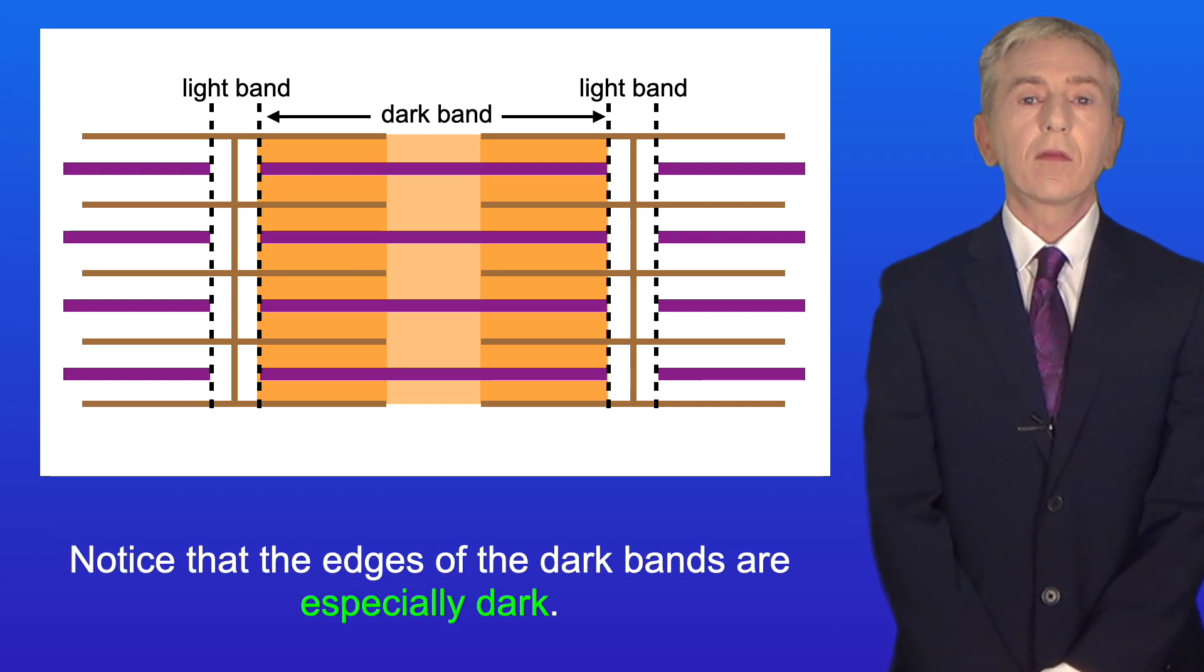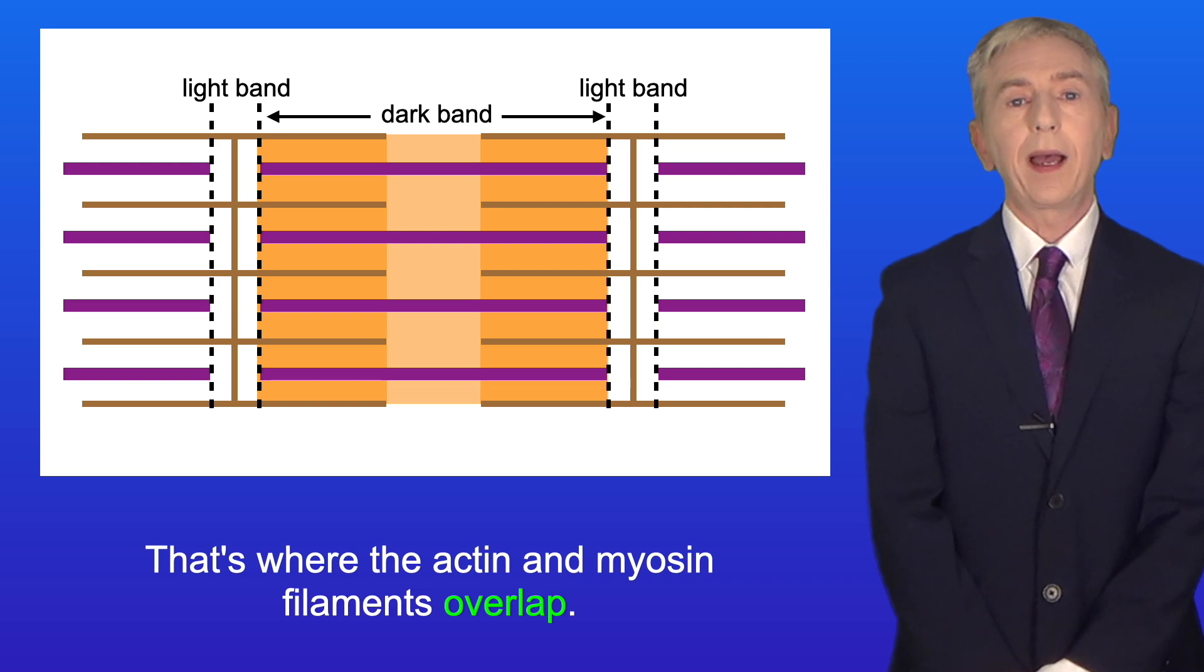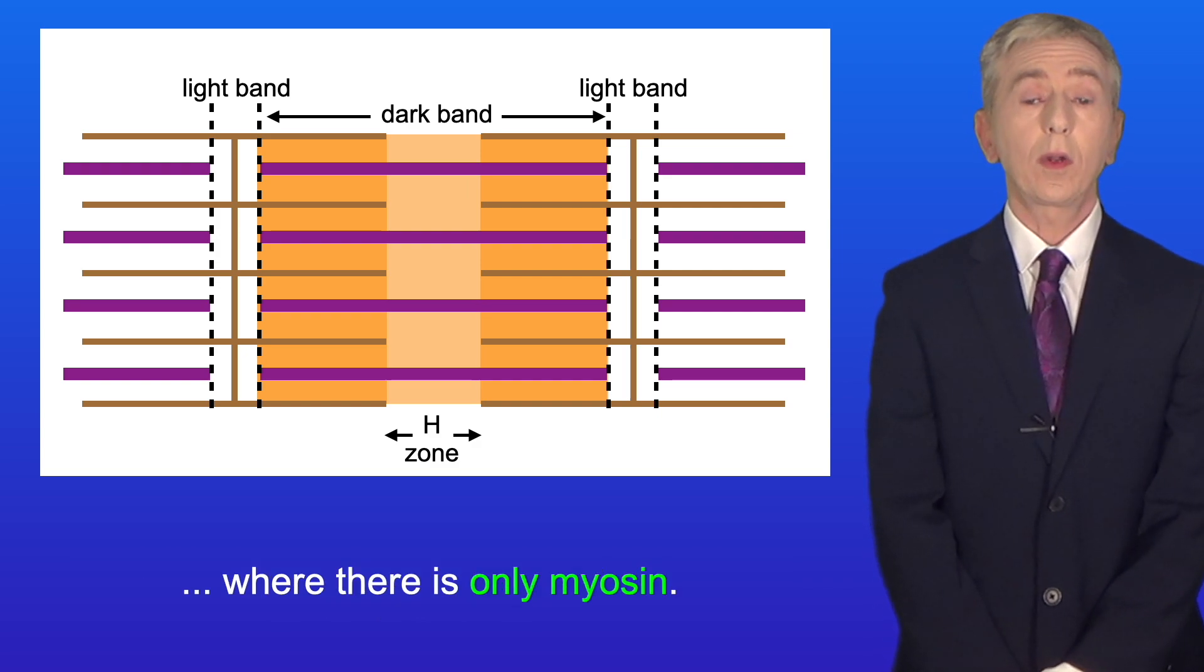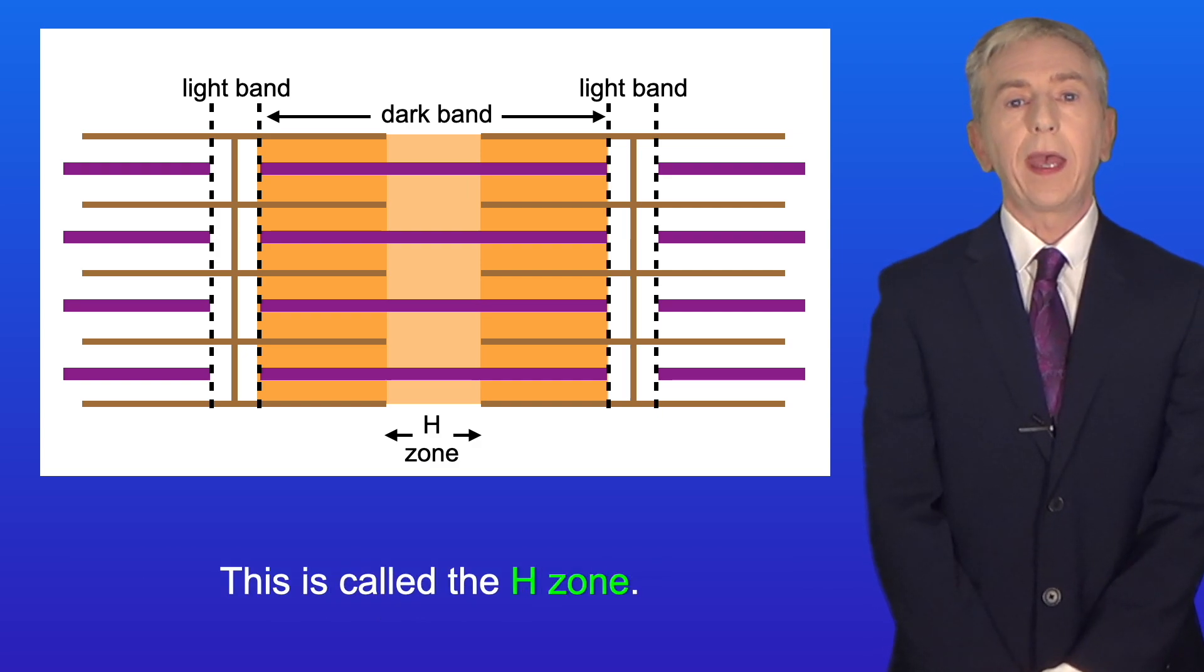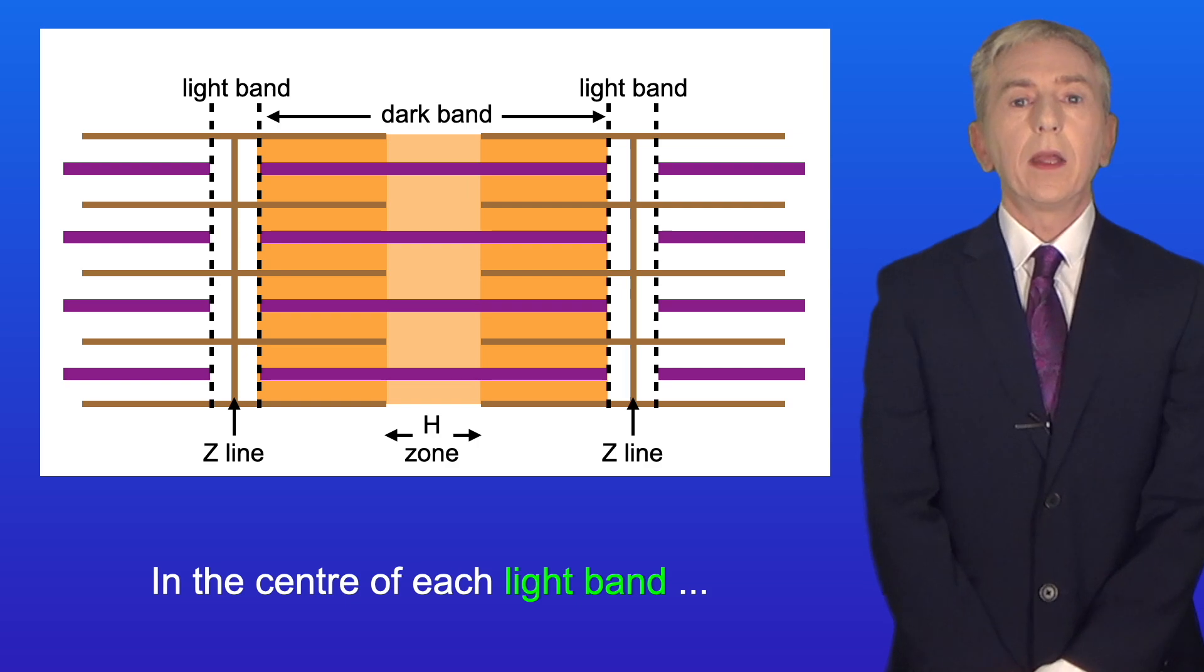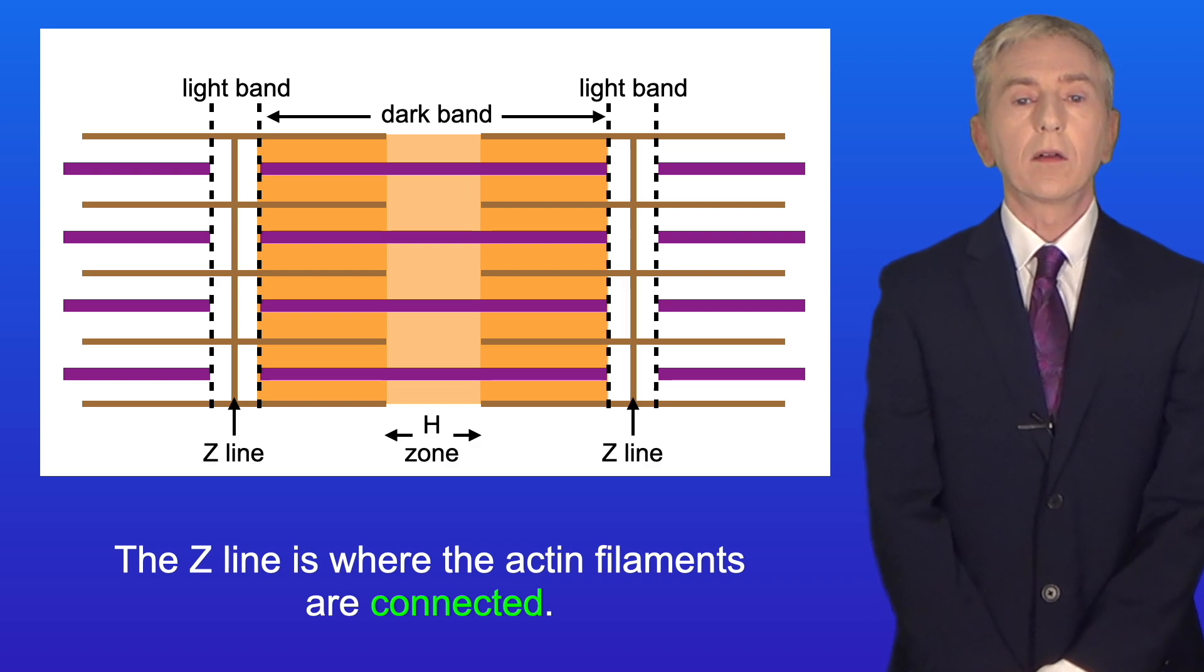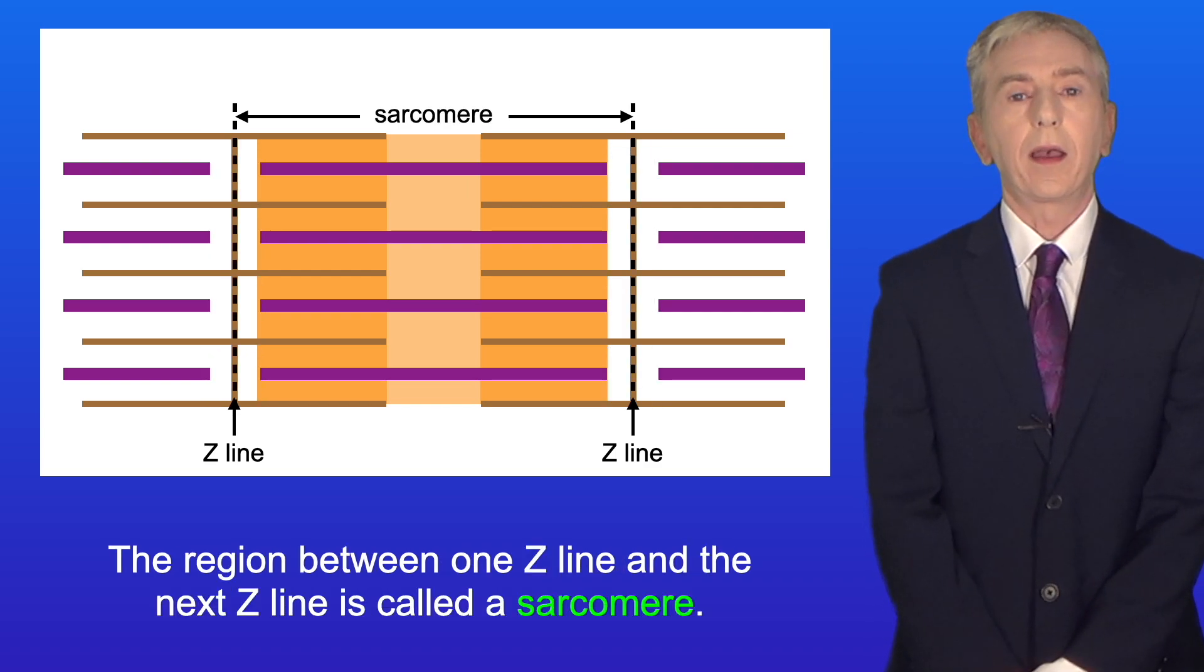Notice that the edges of the dark bands are especially dark. That's where the actin and myosin filaments overlap. In the center of each dark band we have a slightly lighter region where there's only myosin. This is called the H zone and in the center of each light band we have the Z line which we saw earlier. The Z line is where the actin filaments are connected. The region between one Z line and the next Z line is called a sarcomere.